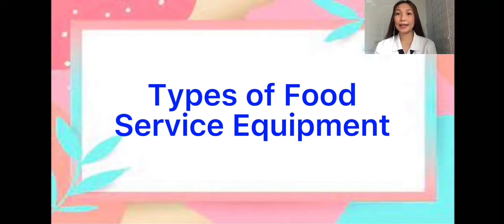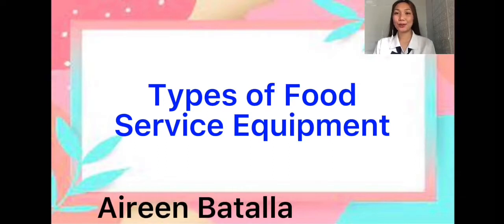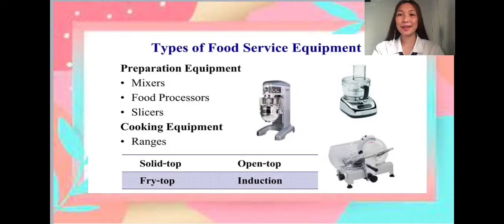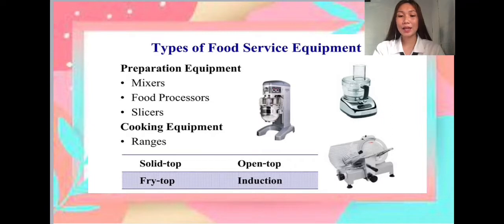Equipment should be designed, constructed, and finished so that it can be easily cleaned and disinfected safely without any specific tools. My name is Irene Battaglia and I am going to present the types of food service equipment. Preparation equipment includes mixers, food processors, and slicers. A mixer is an electric appliance used for mixing foods. A food processor is an electric kitchen appliance used for chopping, mixing, or pureeing foods. And a slicer is a thin-bladed knife used for slicing.